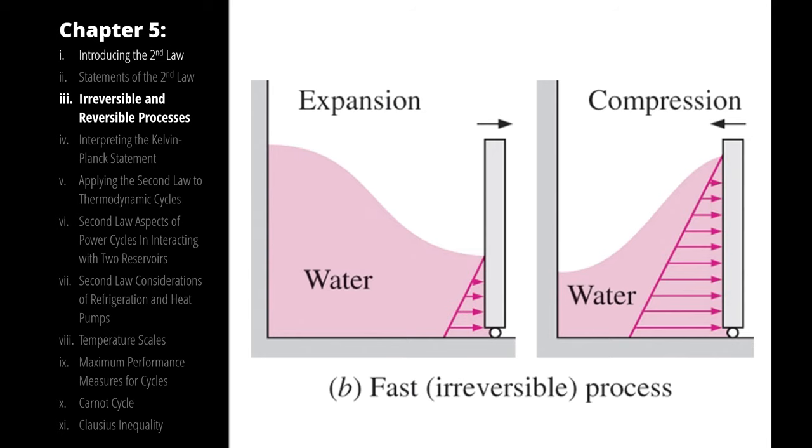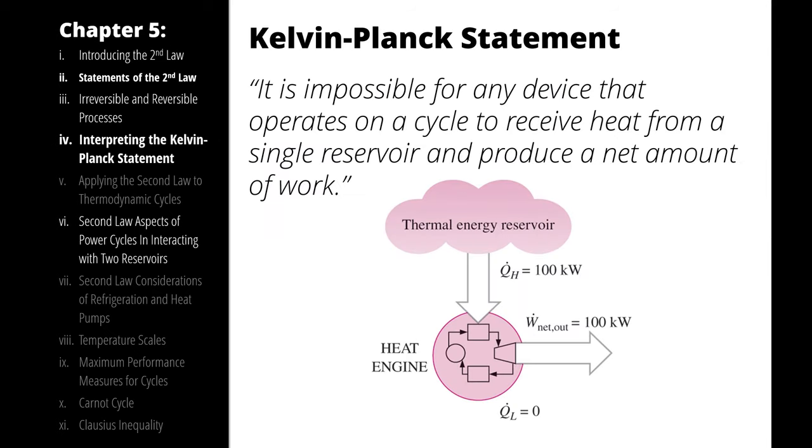Two manifestations of the second law of thermodynamics are the Kelvin-Planck statement and the Clausius statement. The Kelvin-Planck statement says that it is impossible for any device that operates on a cycle to receive heat from a single reservoir and produce a net amount of work.